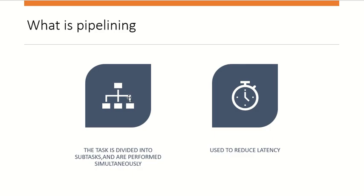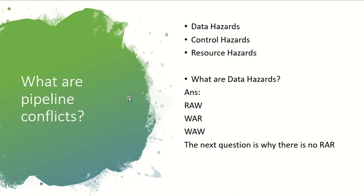The next question was: what are pipeline conflicts? I answered that the conflicts are data hazards, control hazards, and resource hazards. He then asked what are data hazards — my answer was read after write (RAW), write after read (WAR), and write after write (WAW). He then asked why there is no read after read (RAR) conflict, and my answer was that the read operation does not affect the register, so there is no conflict.